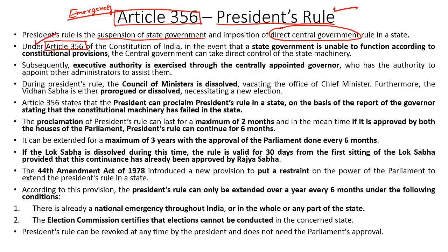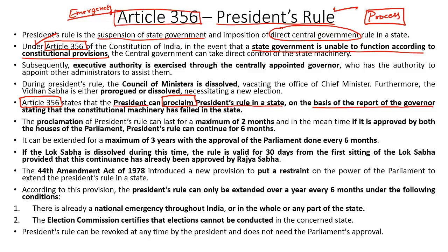This emergency provision can be invoked if a state government is unable to function according to constitutional provisions — that is, if there is a failure of constitutional machinery in the state. According to Article 356, the President of India can issue a proclamation for imposing President's rule only on the basis of a report provided by the governor indicating that the constitutional machinery in the state has failed.